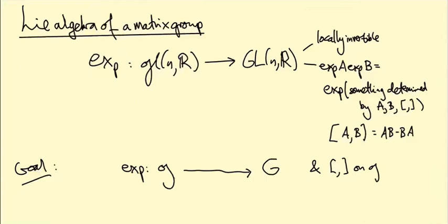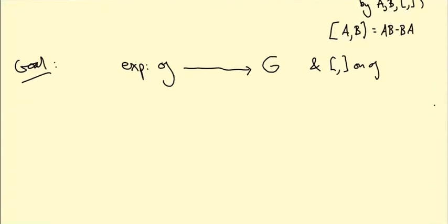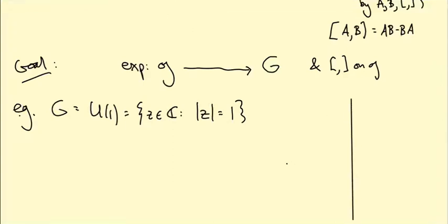I just want to give you an example where this really works nicely, and it's an example you're familiar with. Let G be the group of unit complex numbers, in other words the numbers in C such that they have length one. It's the unit circle in the complex plane. Why is this a group? Well, if you multiply two of these guys together, what you get is another unit complex number.